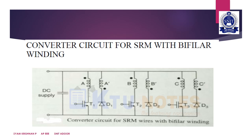Another converter circuit for the switched reluctance motor uses bifilar winding. Each phase has two identical and mutually coupled coils. When T1 is turned on, current flows through winding A, and when it is turned off the stored energy goes back to the supply through A' and D1. The drawbacks of this circuit are that double the number of connections are needed, poor utilization of copper, and voltage spikes due to imperfect coupling.